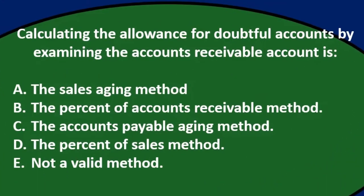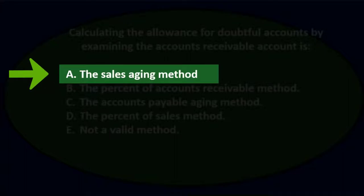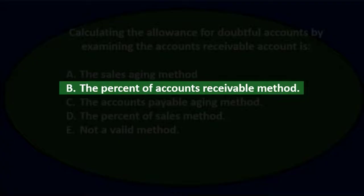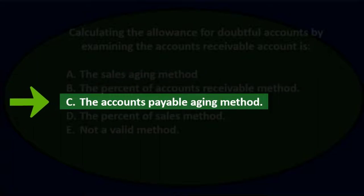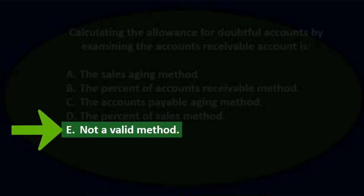First question. Calculating the allowance for doubtful accounts by examining the accounts receivable account is: a) the sales aging method, b) the percentage of accounts receivable method, c) the accounts payable aging method, d) the percentage of sales method, or e) not a valid method.